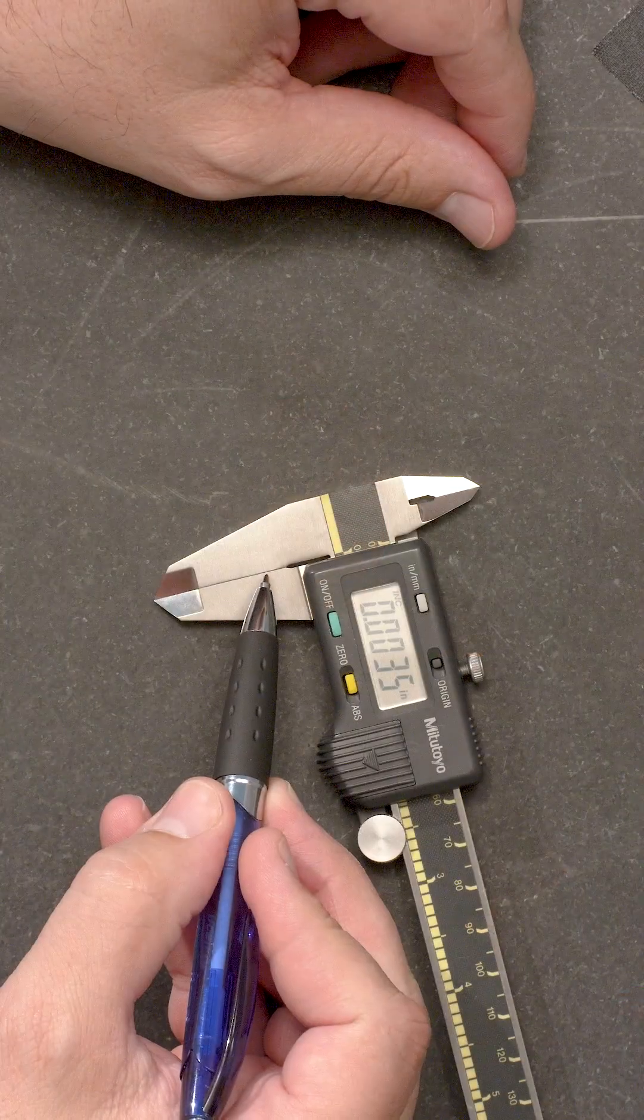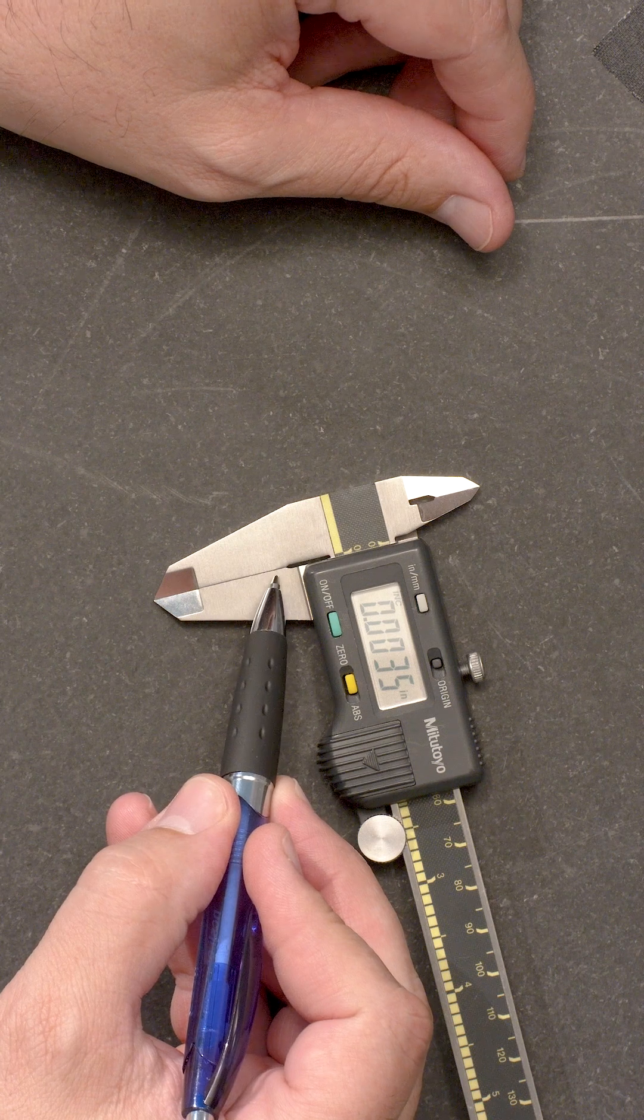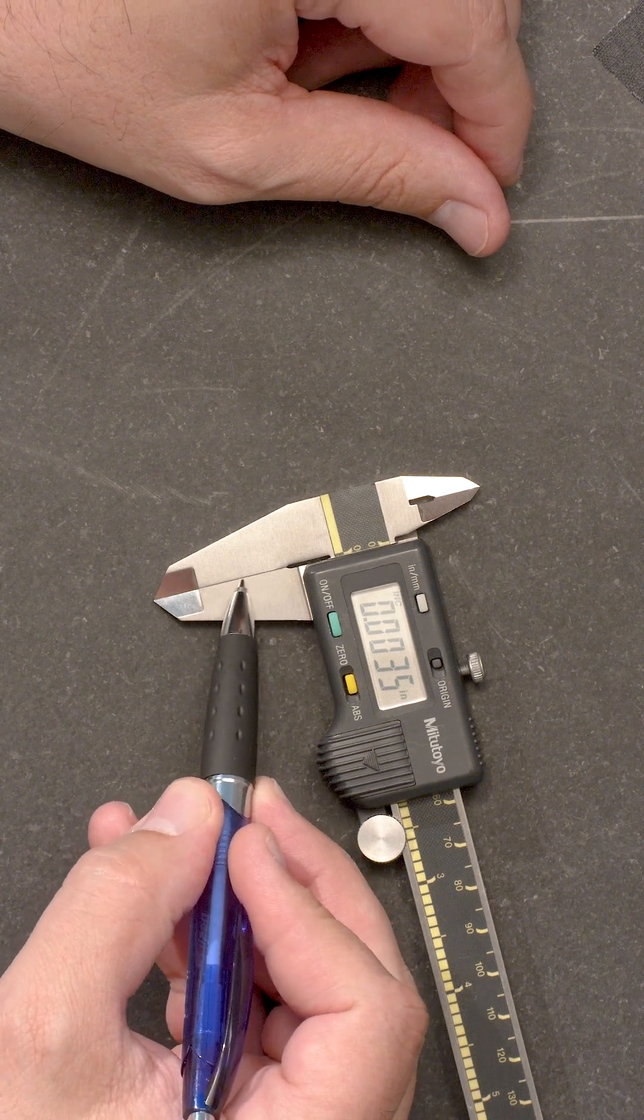This may look silly, but it actually works. The use of the light gap is an efficient way to see any wear or bending of the jaws.